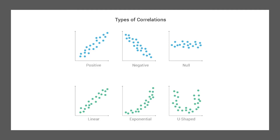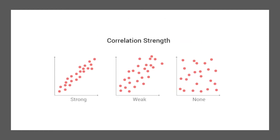Next we are going to look at the types of correlations. Here you can see different graphs showing different kinds of correlations. Types of correlations include positive, negative, null, linear, exponential, and u-shaped. When we talk about strength of correlations, graphs can have strong or weak correlations, or there is no correlation at all. Graph 1 shows strong correlations, the middle graph shows weak correlations, and the last graph shows no correlations at all.